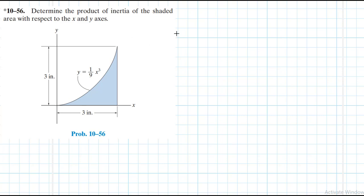Welcome to this screencast. We are going to be solving an engineering mechanics problem: determine the product of inertia of the shaded area with respect to the x and y axis. This problem comes from the Engineering Mechanics Statics textbook, 13th edition by RC Hibbeler.